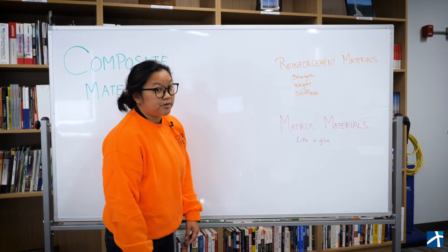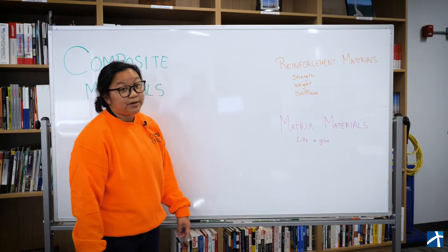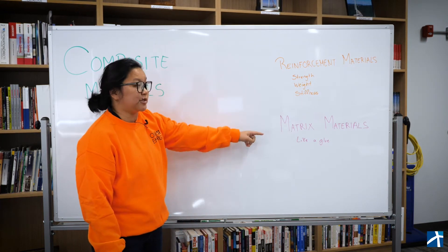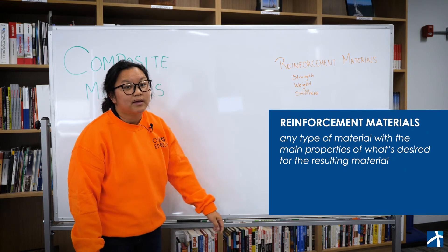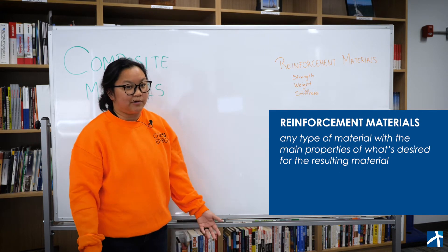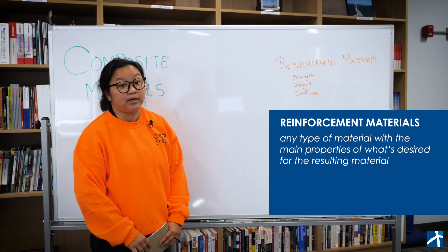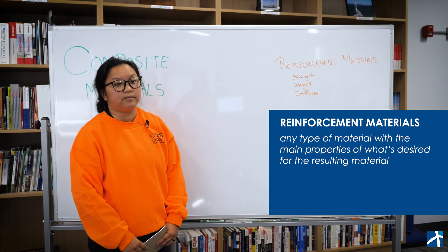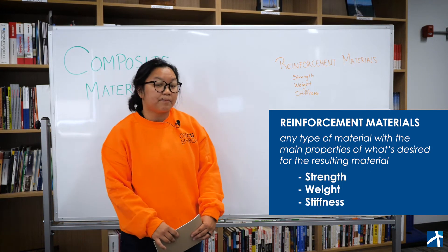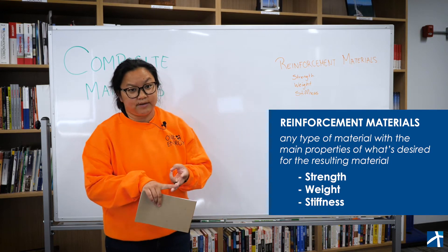The two types of materials used to make a composite material are called reinforcement material and matrix material. The reinforcement material is any type of material with the main properties of what's desired for the resulting composite material. Examples of some reinforcement material properties are strength, weight, and stiffness.